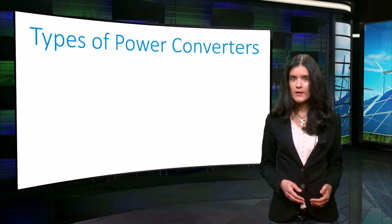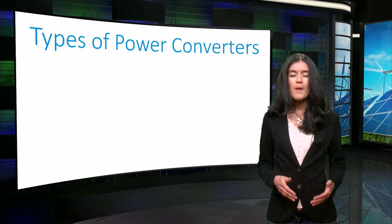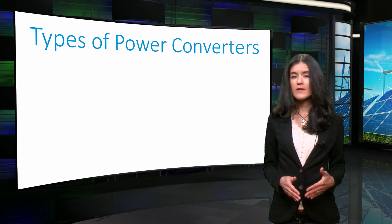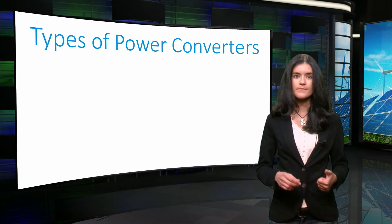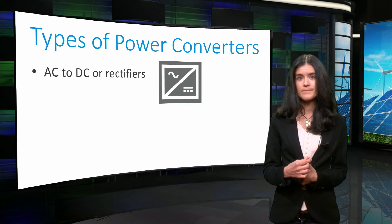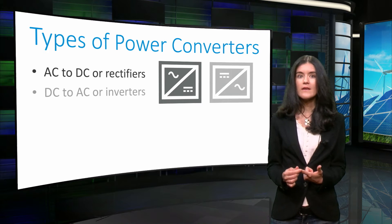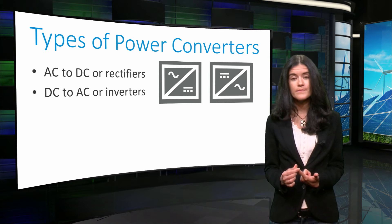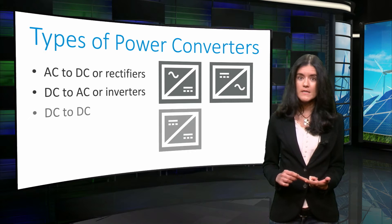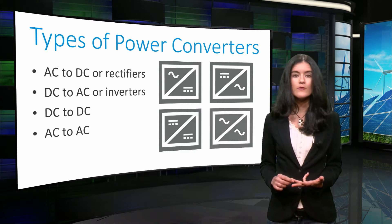Based on the input and the output waveforms, power converters can be classified into four types: AC to DC, also known as rectifiers; DC to AC, also known as inverters; DC to DC; and AC to AC.